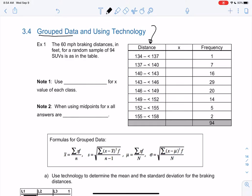Otherwise, maybe our list is just way too long. In this example, we have 94 SUVs, so we didn't want to have a list of 94 data values, so we group them. We're looking at the 60 mile per hour braking distance in feet for 94 SUVs, a random sample. So when they brake at 60 miles per hour, how far until they stop? That's what this is measuring.